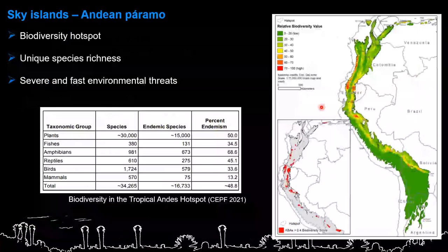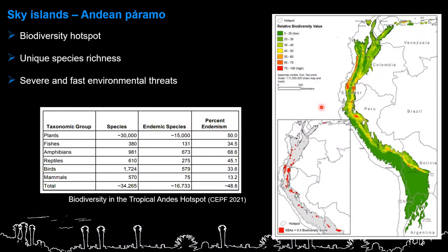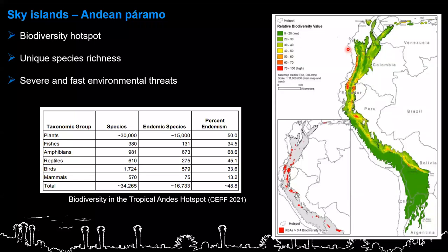Our area of interest is called the Andean paramo, and it is part of the tropical Andes biodiversity hotspot. A hotspot is defined by its high species richness, high endemism, and sensitivity to environmental threat, meaning it has a high rate of degradation. The map shows the relative biodiversity values used to define key biodiversity areas. If you look at the Andes within South America, the Andes hold about half of the total plant richness on the whole continent, which underlines the extreme importance of those ecosystems.